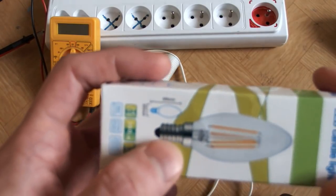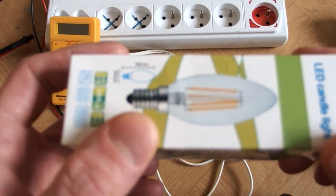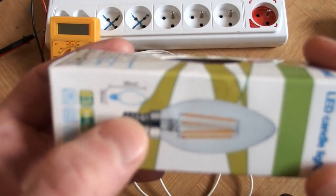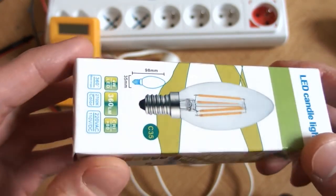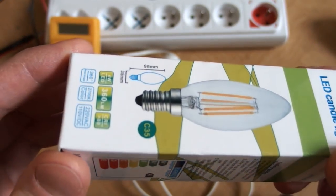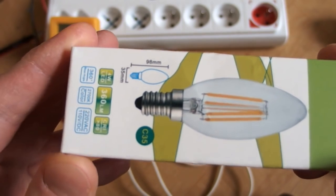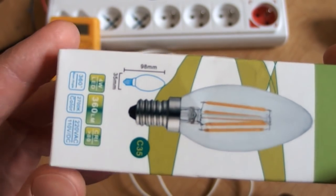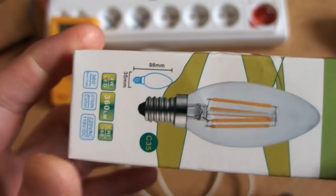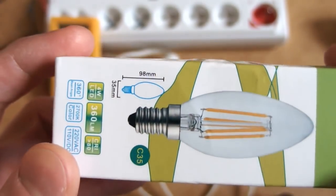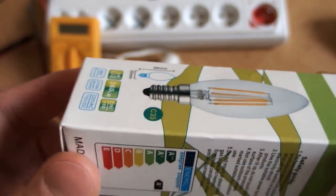But this one has a very small base and I doubt this has a capacitive dropper inside it because it's just too small. So what can be inside? Just a resistor and a bridge or a switching regulator, switching supply, buck regulator or what can this be, linear regulator. So let's see.